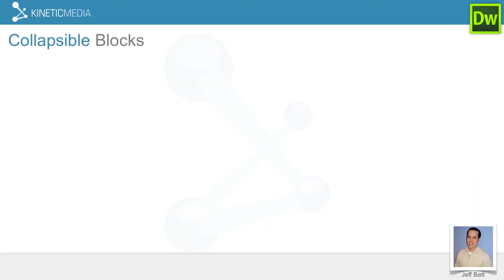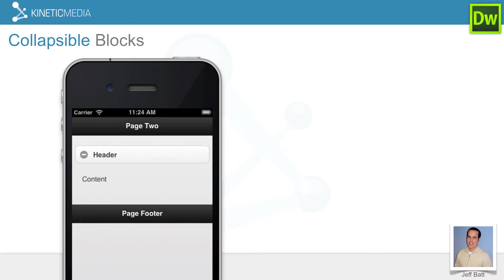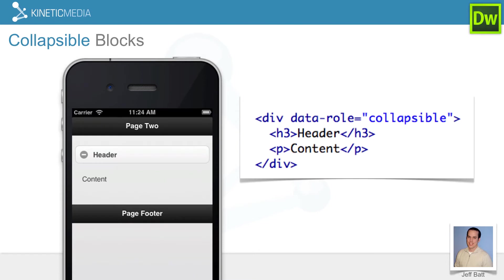So what is a collapsible block? A collapsible block is a way for the learner to tap on a button and expand out content. The content could be whatever you want — any type of HTML content. You can have pictures, videos, or whatever you want there. It's pretty simple to do: you take a div tag and add data-role equals, in quotes, collapsible. This makes anything within this div tag a collapsible item.